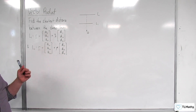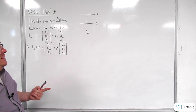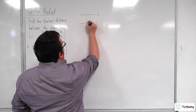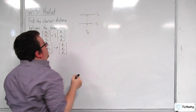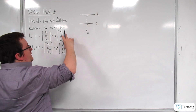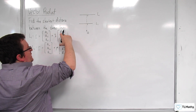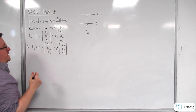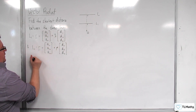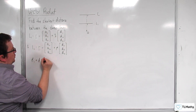So that's the plan. The first thing I need to do is work out a vector that is perpendicular to both L1 and L2. That means I'm going to need to find the cross product between the direction vectors — this direction vector and this direction vector — so I'm going to say that this is D1 crossed with D2.